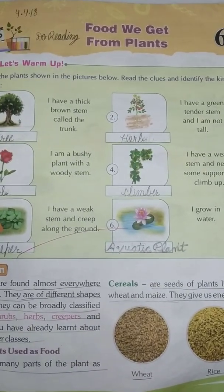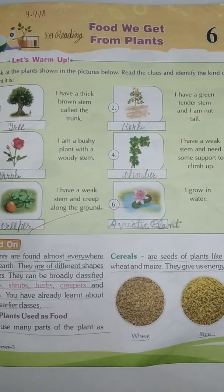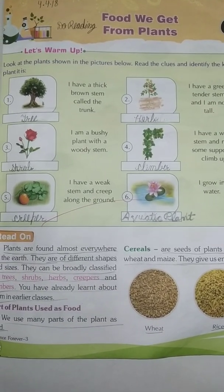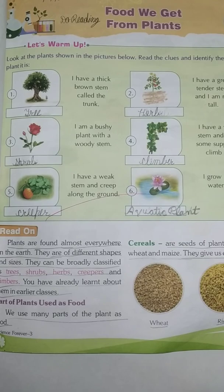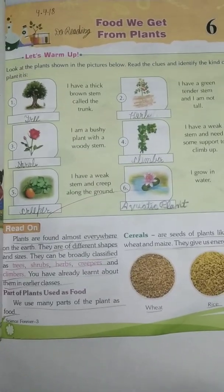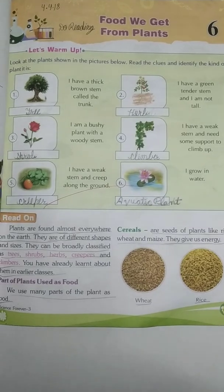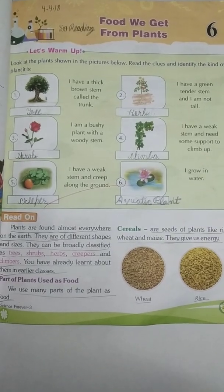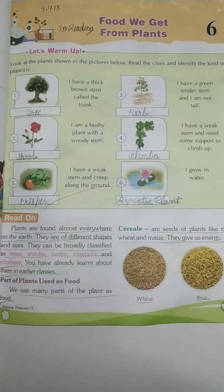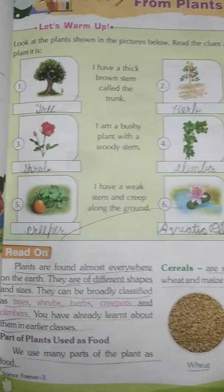Lesson 6: Food We Get from Plants. Write down the date and do the reading. Look at the plant shown in the picture. Read the clues and identify the kind of plant it is. Number 1: I have a thick brown stem called the trunk. What is it? Write down: Tree.